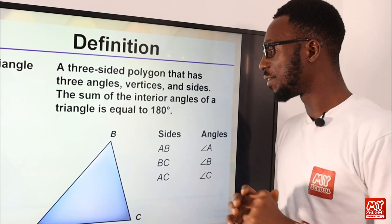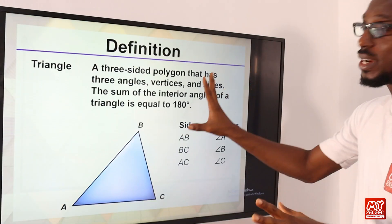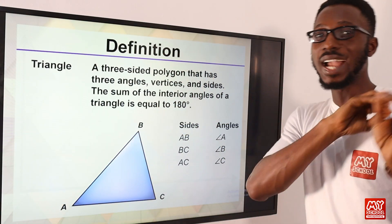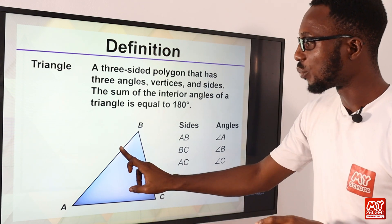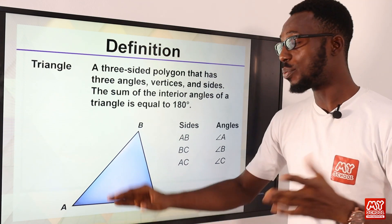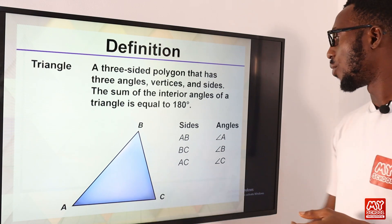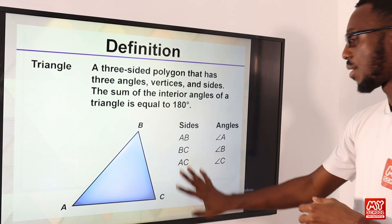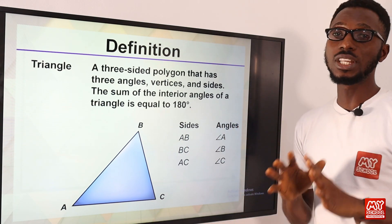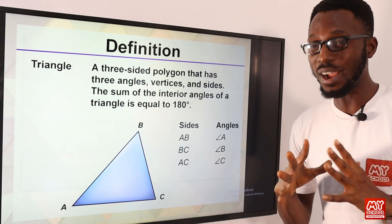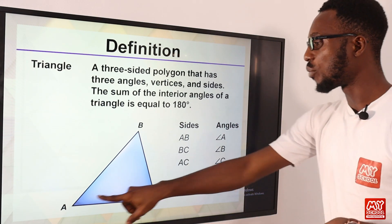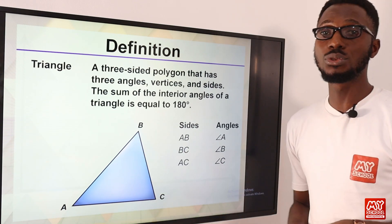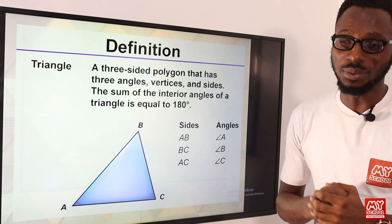Let's run through that definition together. A triangle is a three-sided polygon, so we have side 1, side 2, and side 3 — some call them edges. You can see A to B, B to C, and A to C, in no particular order. There should be three angles: angle A, angle B, angle C, and all of these angles sum up to 180 degrees.